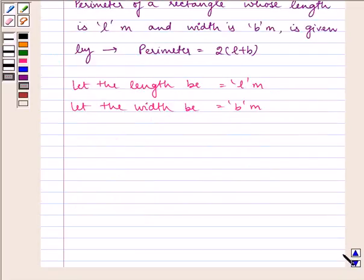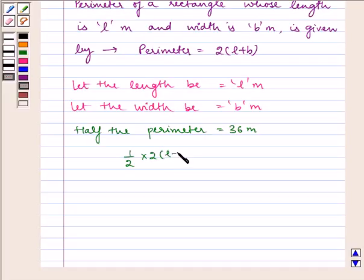According to the question, it is given to us that half the perimeter is equal to 36 meter. Therefore, we have one-half into 2 into L plus B equals 36, or L plus B equals 36. This is our equation 1.